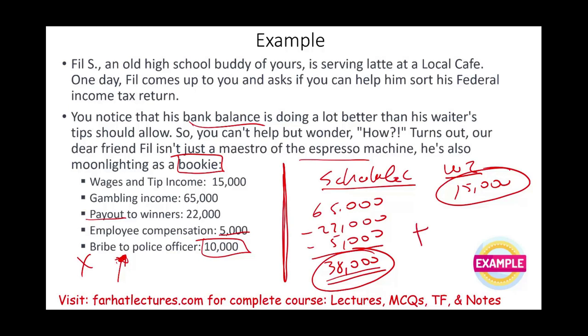However, if you know a client is bribing a police officer, there is no confidentiality protection for a CPA, accountant, or bookkeeper in that situation. You have to be aware and careful of what you do. Your integrity is the most important thing as a CPA or accountant, so make sure you keep that.